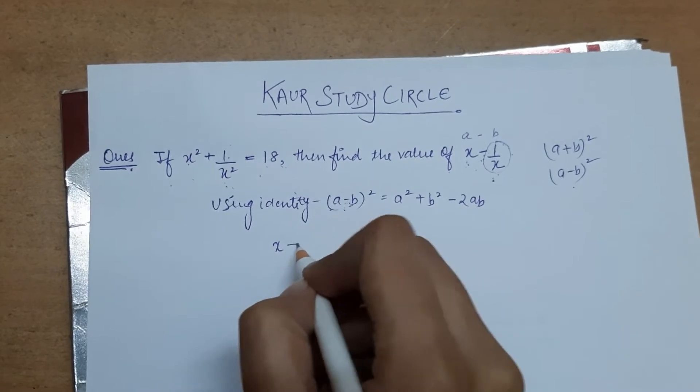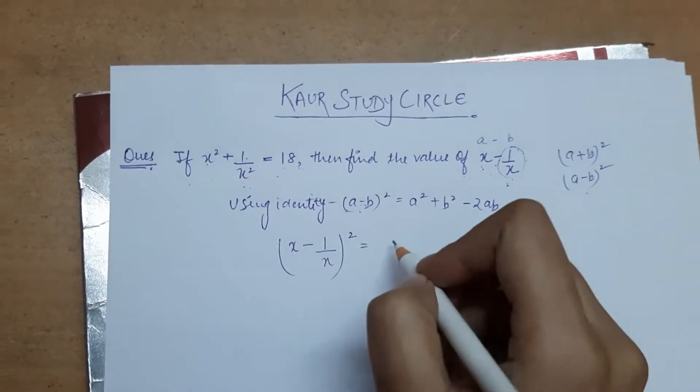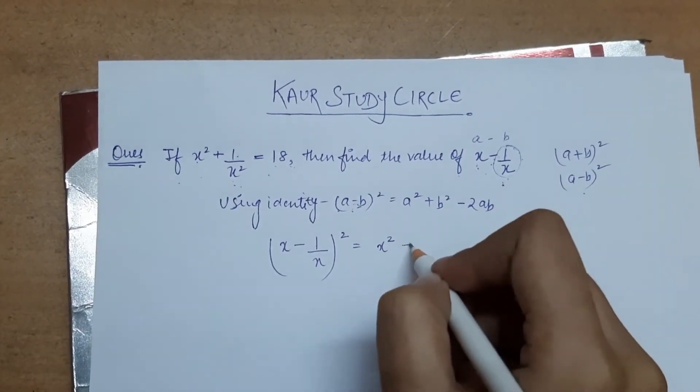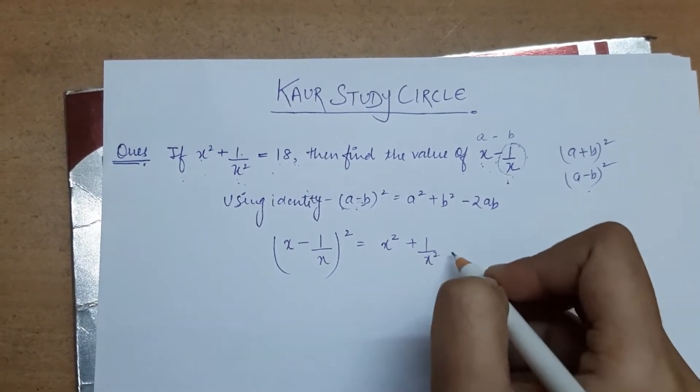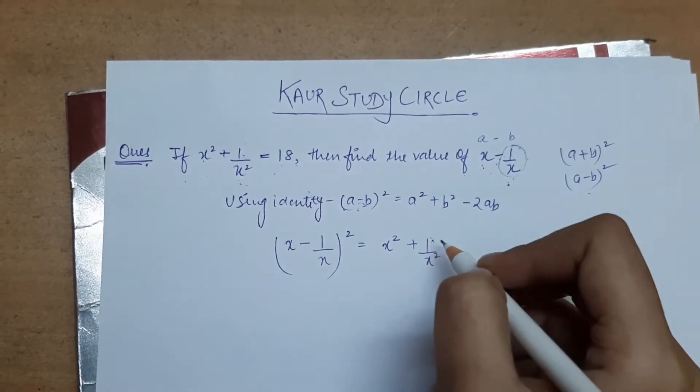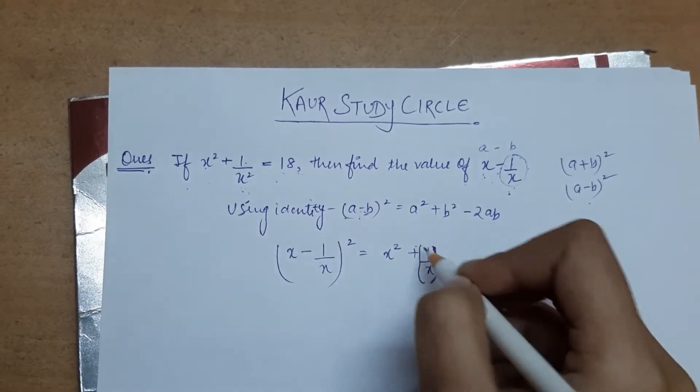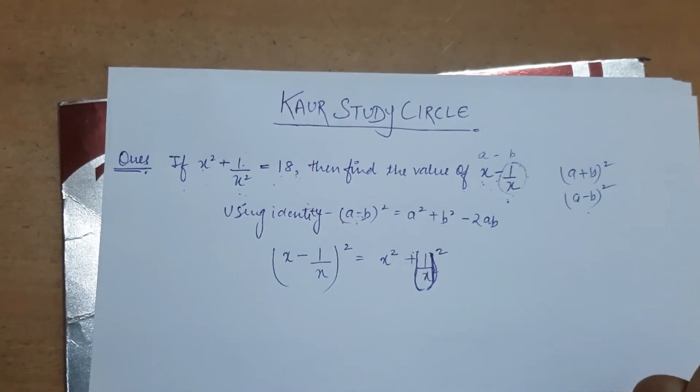So we can write x minus 1 by x whole square is equals to x square plus 1 by x whole square - we should write this whole square.